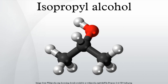Isopropyl alcohol is a chemical compound with the molecular formula C3H8O or C3H7OH. It is a colorless, flammable chemical compound with a strong odor. It is the simplest example of a secondary alcohol, where the alcohol carbon atom is attached to two other carbon atoms, sometimes shown as 2CHOH. It is a structural isomer of propanol.